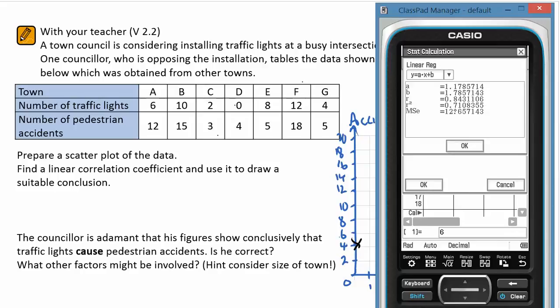The figure of 0.8431 suggests a strong positive correlation. In other words, there's some evidence to suggest that the more traffic lights the town has, the more accidents will occur.